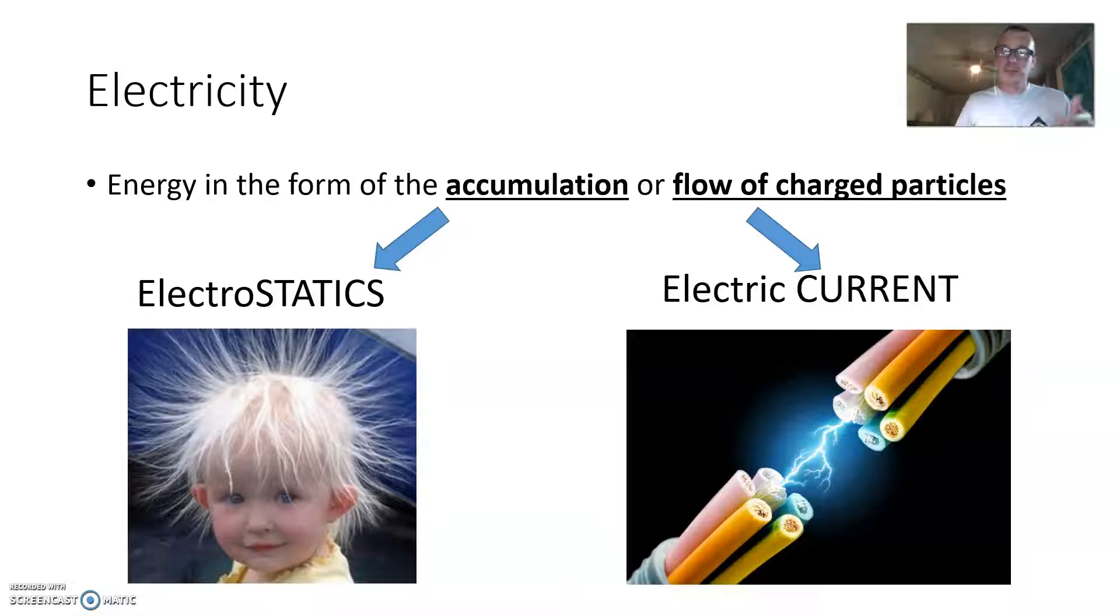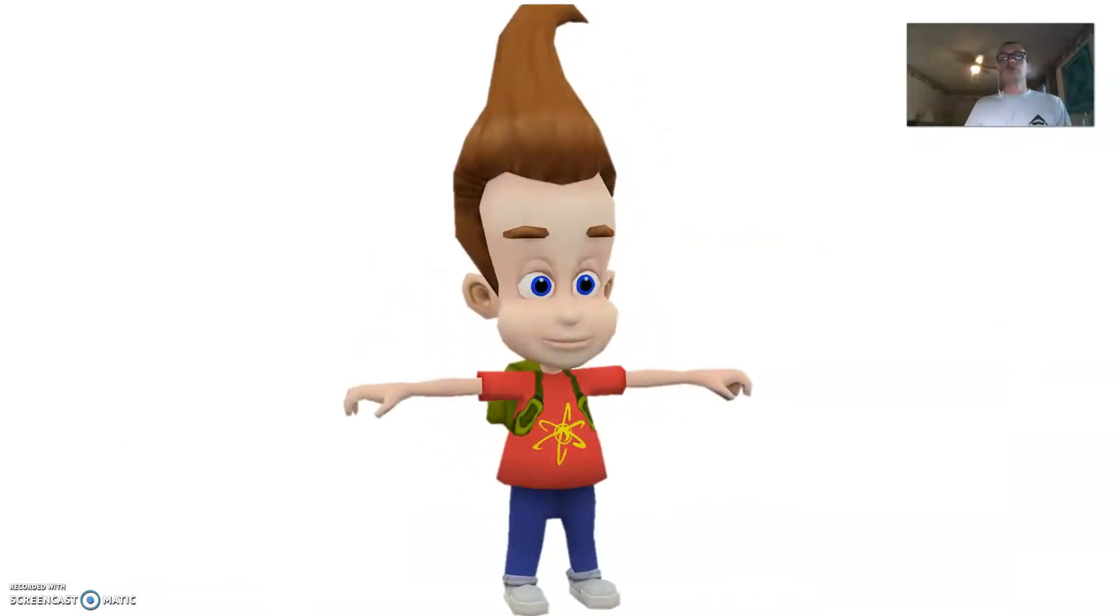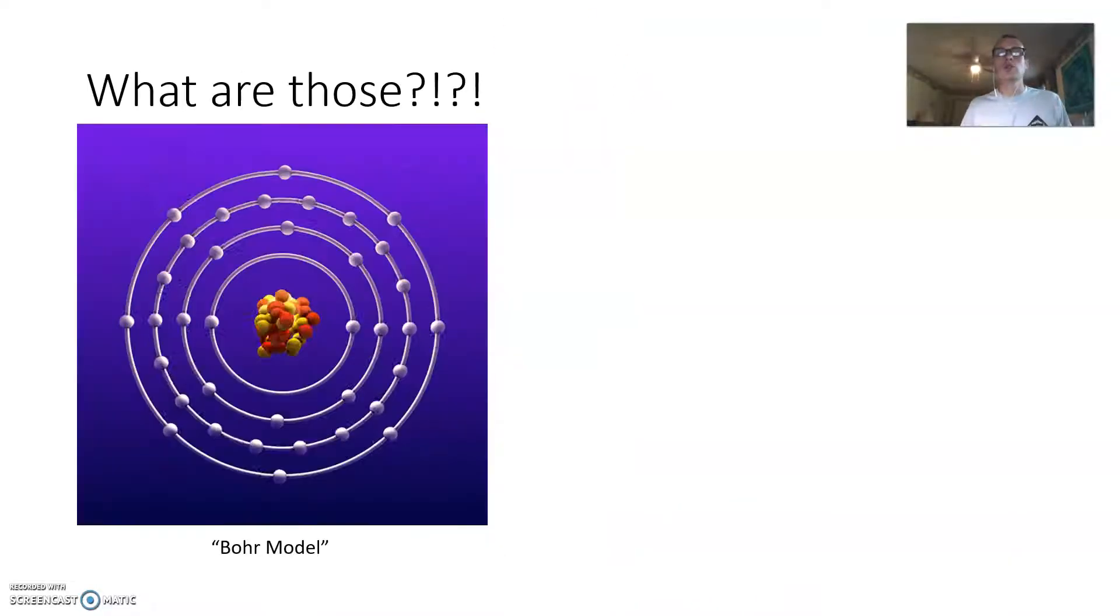Like if you have current, it's measured in amps, then that's going to be talking about the rate of flow of electrons, which we'll get into a little bit. Now you might remember Jimmy Neutron from your childhood. And here is a model, the Bohr model of an atom.